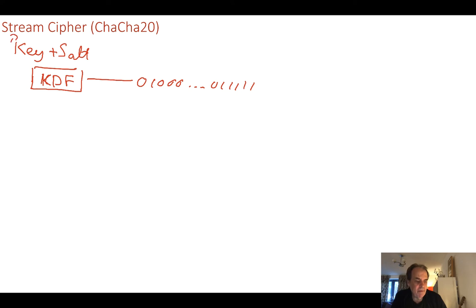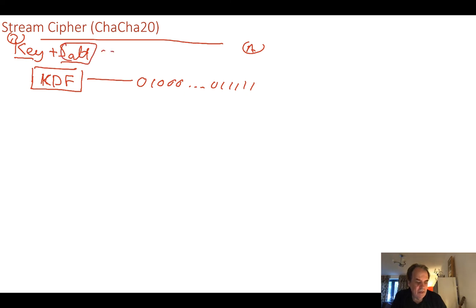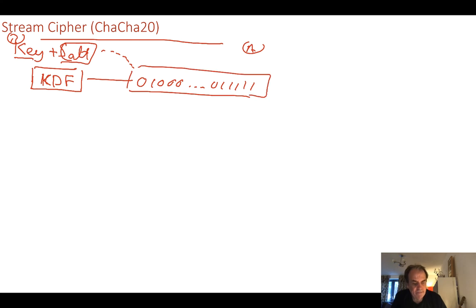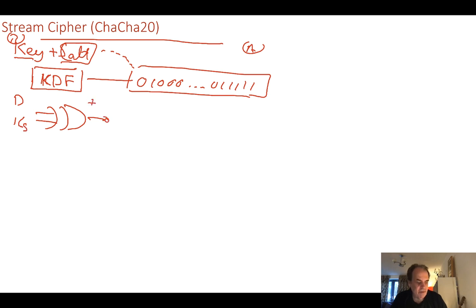Both Bob and Alice share an original passphrase to start the key generation, plus a salt value that is typically stored along with the stream. This creates an infinitely long key stream. Then all we need is an XOR gate, where we take our data stream and our key stream and XOR them together.